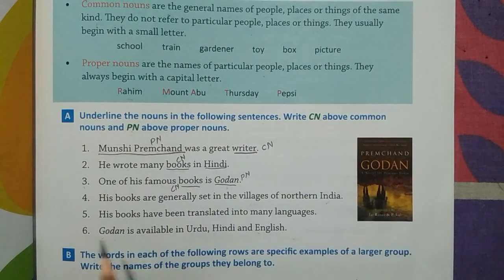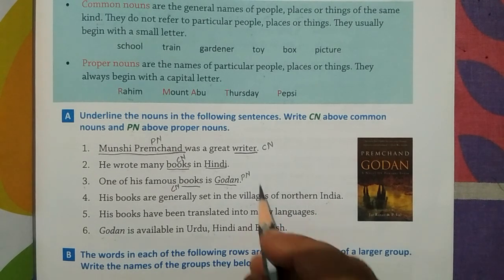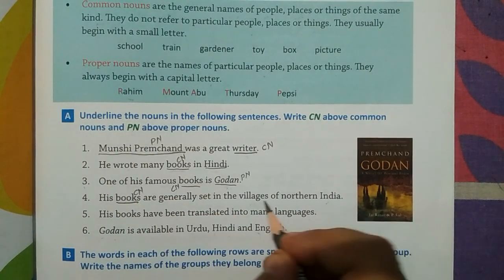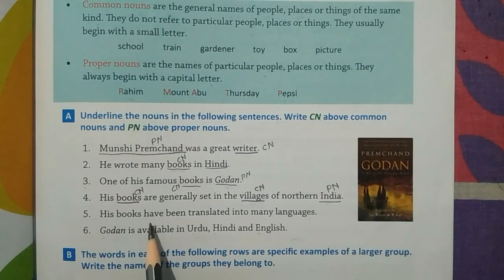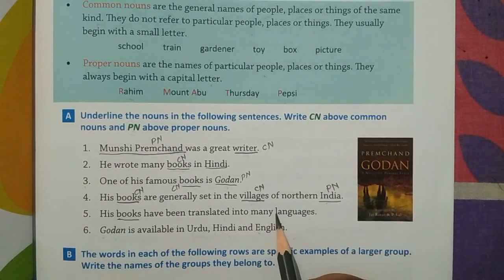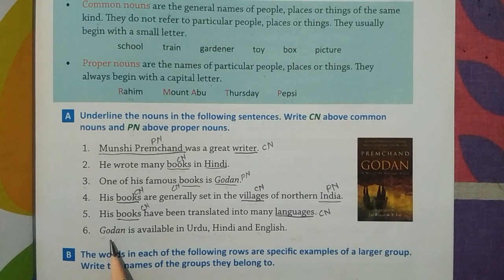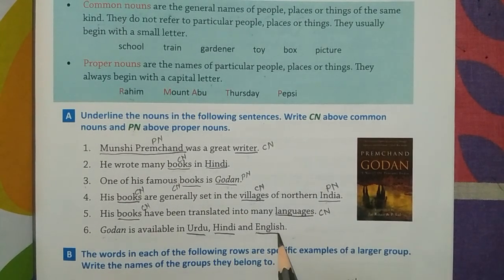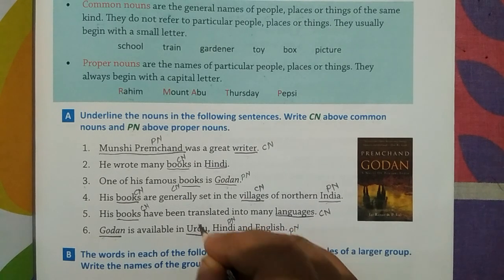'His books are generally set in the village of Northern India.' Books — CN, village — CN, and India — PN. 'His books have been translated into many languages.' There is no proper noun here; books and languages are both CN. 'Godan is available in Urdu, Hindi and English.' Urdu, Hindi, English and Godan are all PN — proper nouns.